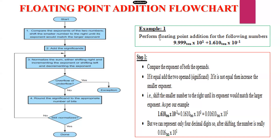Now an example: perform floating point addition for the following numbers — 9.999 base 10 × 10^1 plus 1.610 base 10 × 10^−1. The mantissa is 9.999 plus 1.610. To perform floating point addition, we first check whether the exponents are equal. In this example, the exponents are not equal.